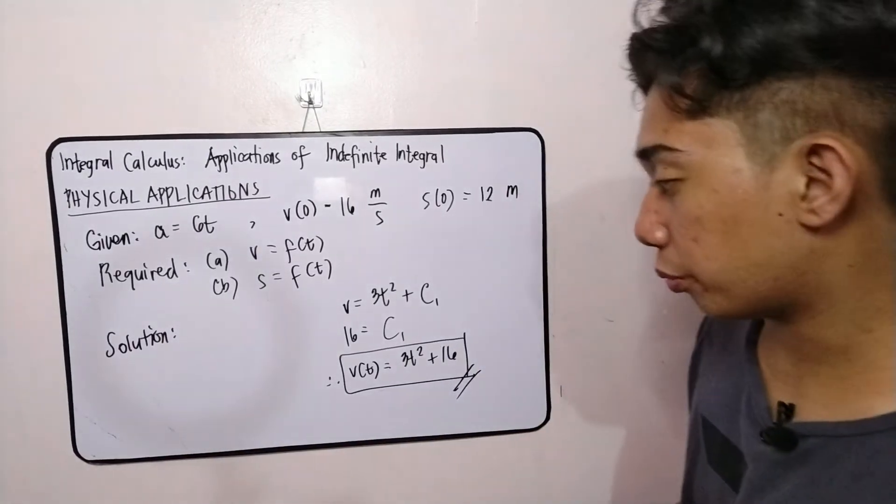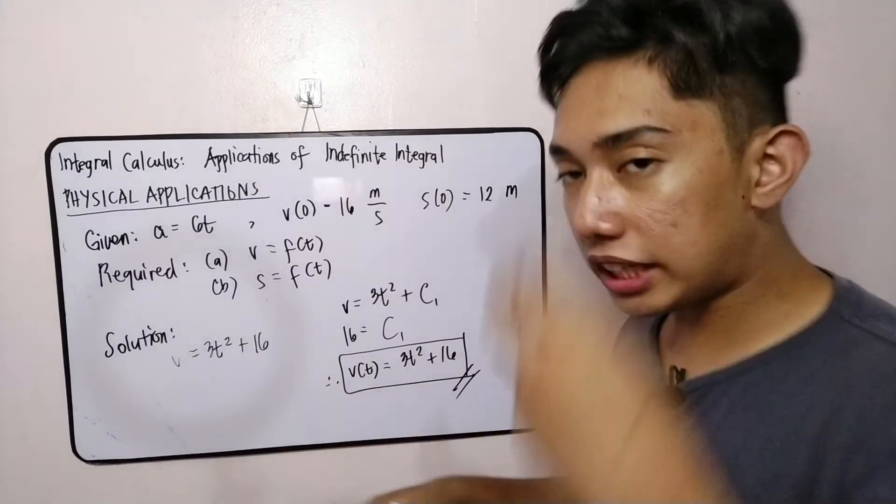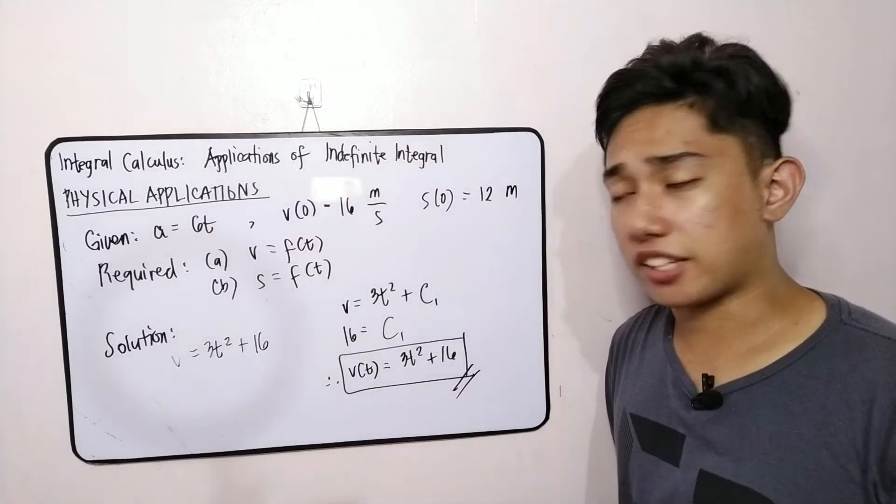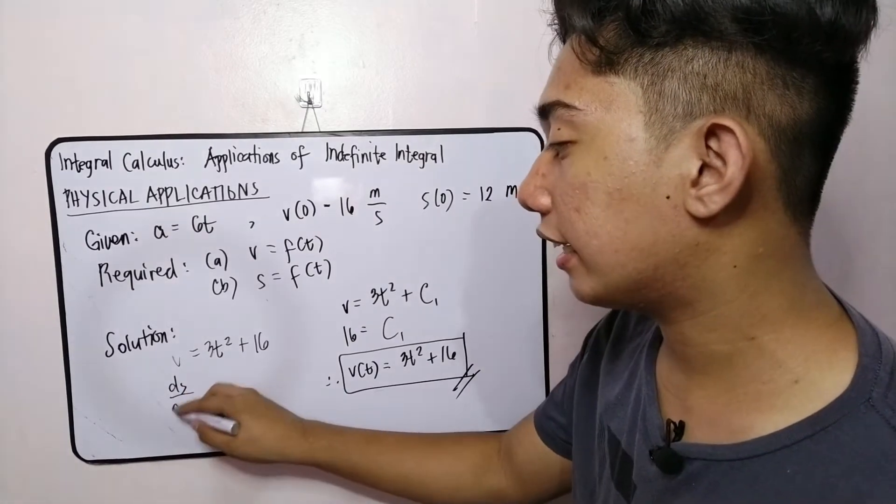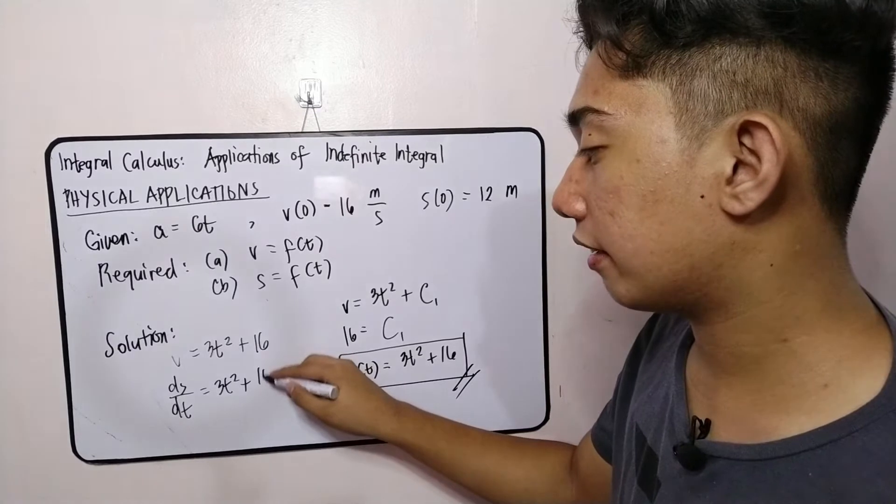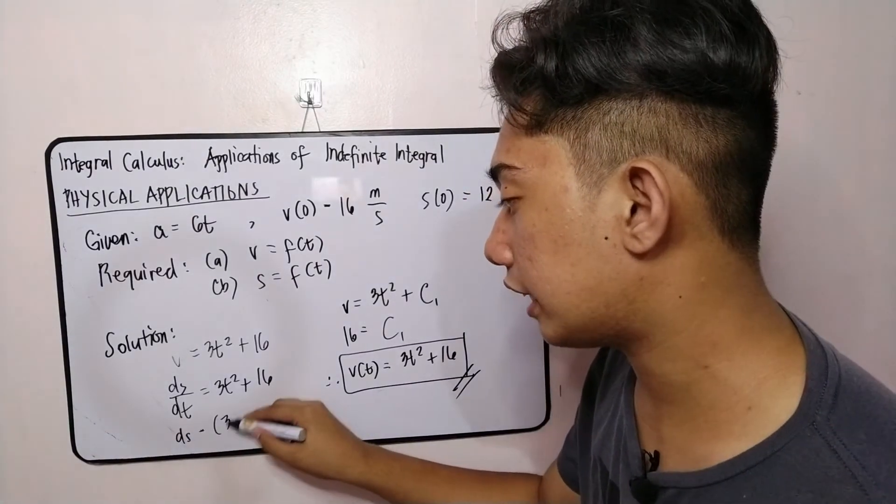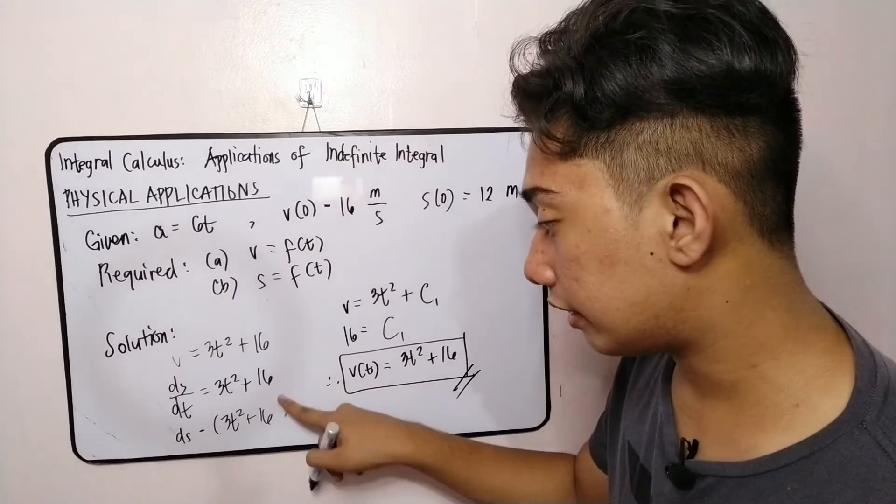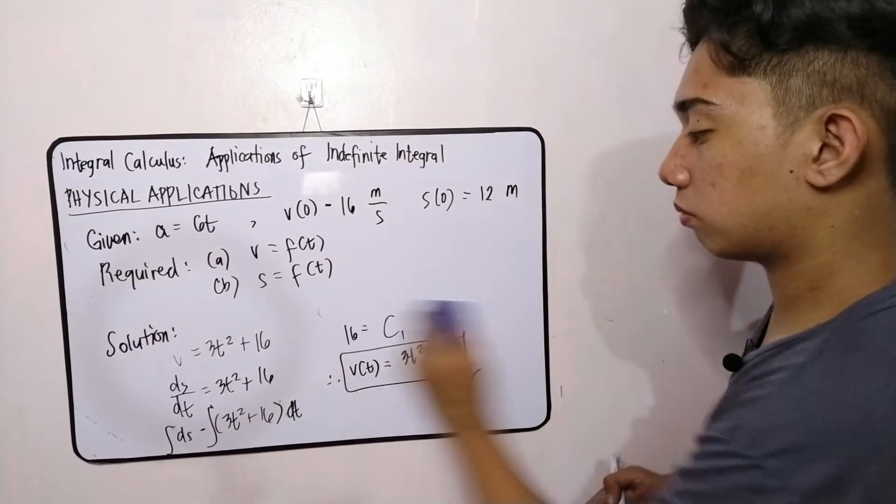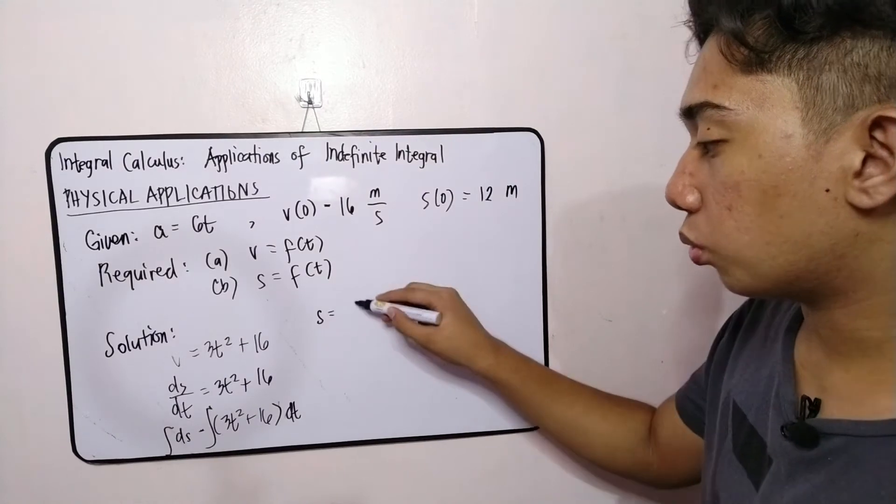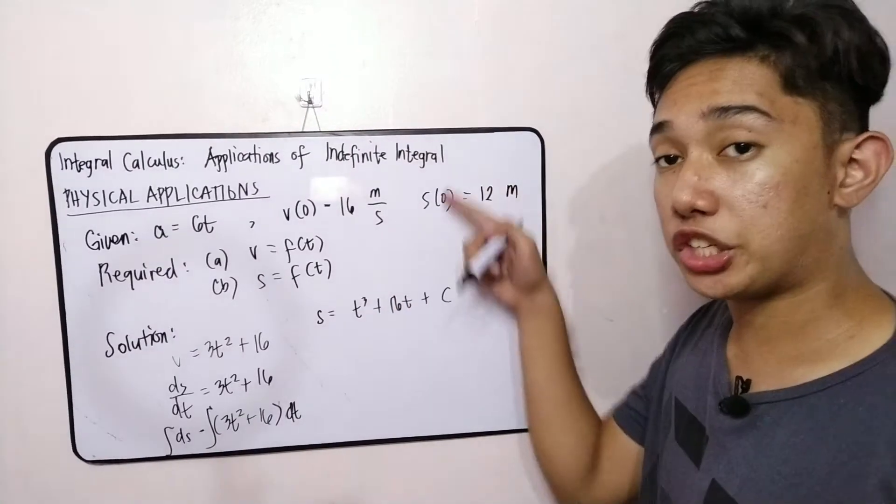We will use this velocity function muna to find the displacement function. So for the velocity function, we have v is equal to 3t squared plus 16. And we know in the differential calculus that, even in physics, that the velocity is the derivative of the displacement with respect to time. So therefore, this is ds over dt is equal to 3t squared plus 16. Variable separable na naman. So this will result to ds is equal to quantity 3t squared plus 16 dt. And this is the integral sign.